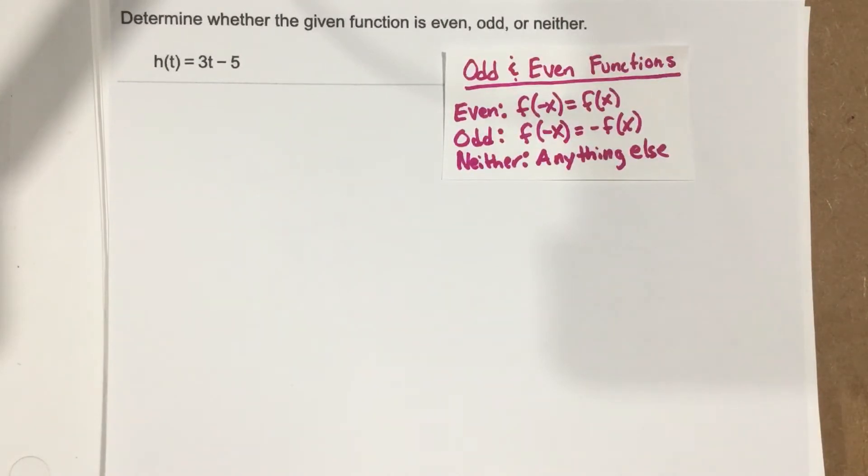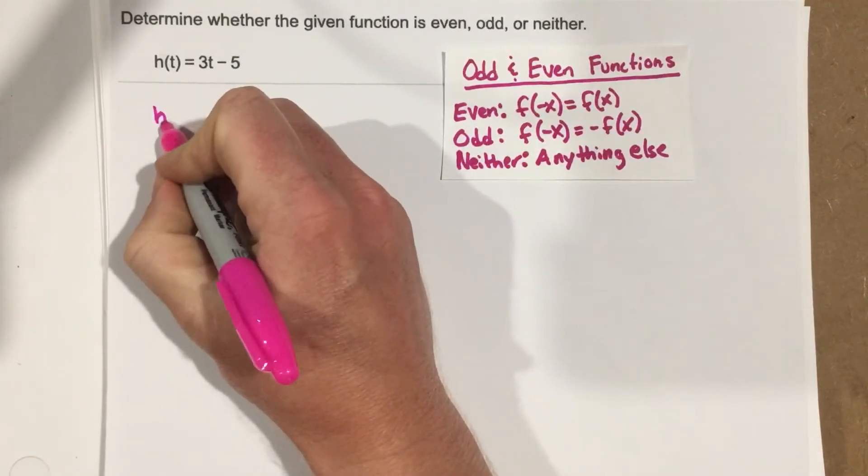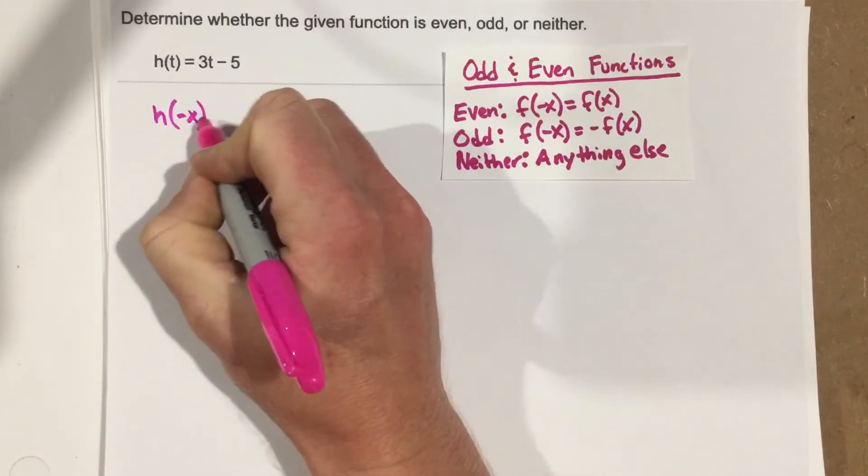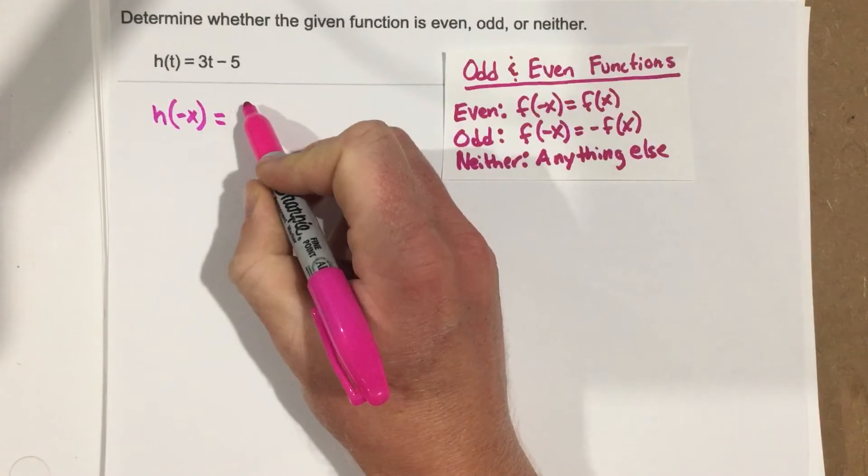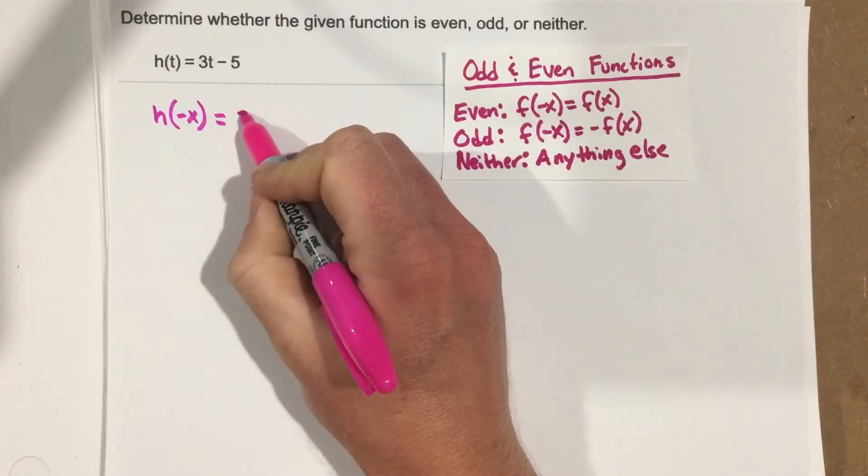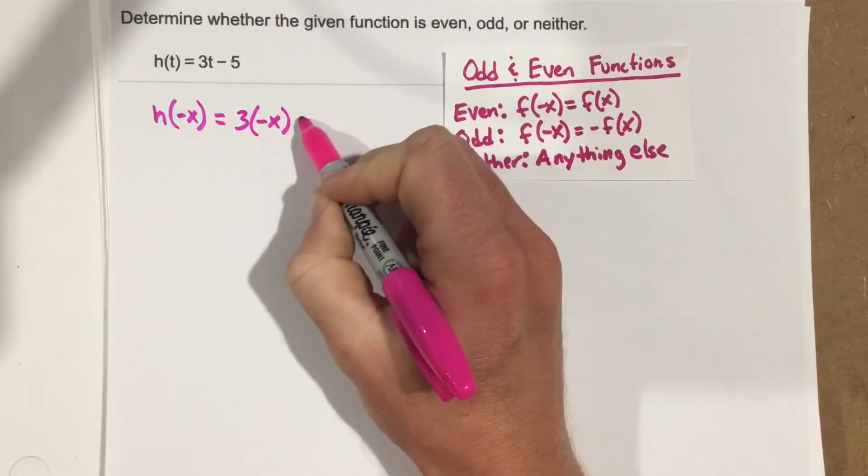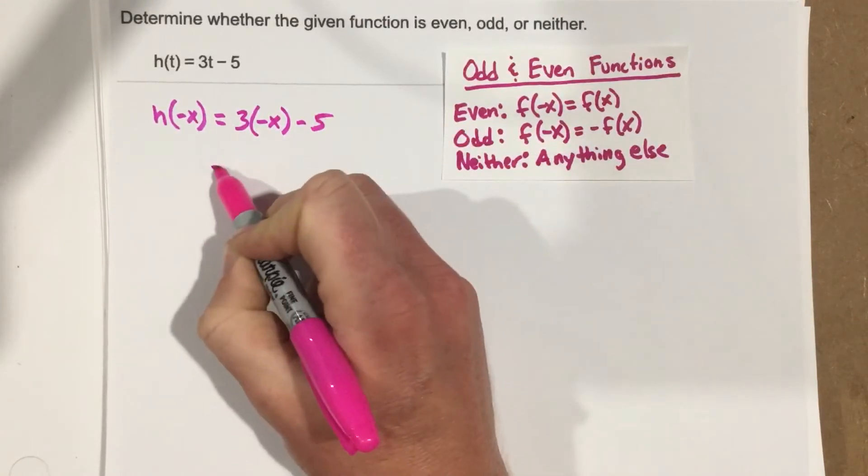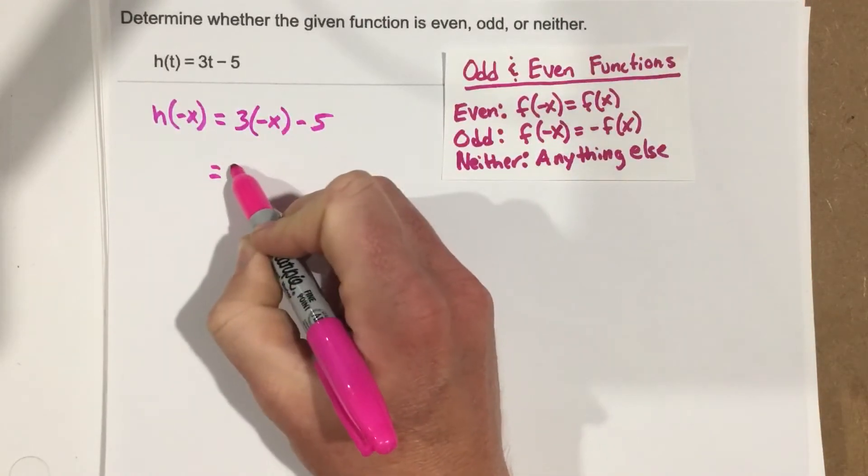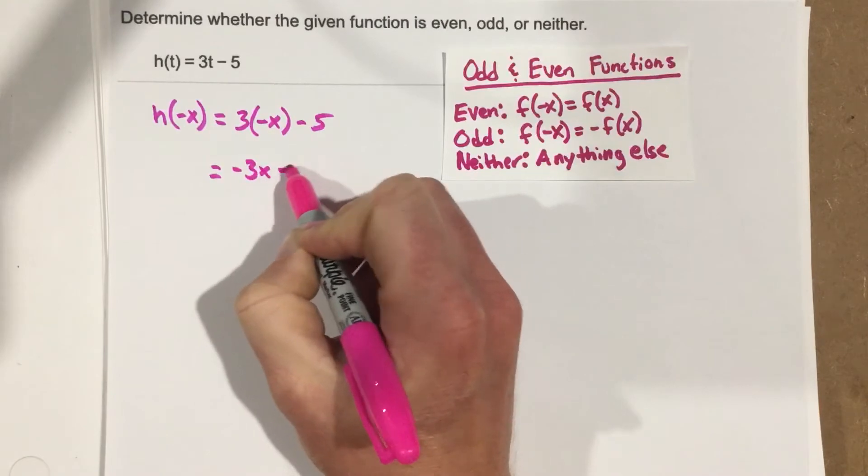So we want to check this by putting in negative x. So we say h of negative x equals, and that input is going to be 3, negative x goes in for t, minus 5. 3 times negative x is negative 3x, minus 5.